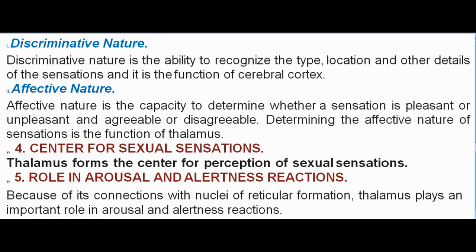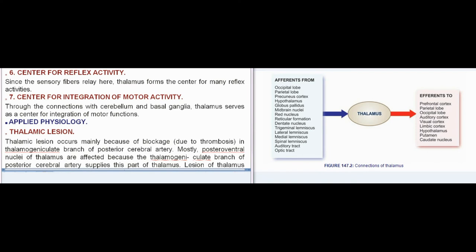Fourth, center for sexual sensations — thalamus forms the center for perception of sexual sensations. Fifth, role in arousal and alertness reactions — because of its connections with nuclei of reticular formation, thalamus plays an important role in arousal and alertness reactions. Sixth, center for reflex activity — since sensory fibers relay here, thalamus forms the center for many reflex activities. Seventh, center for integration of motor activity — through connections with cerebellum and basal ganglia, thalamus serves as a center for integration of motor functions.